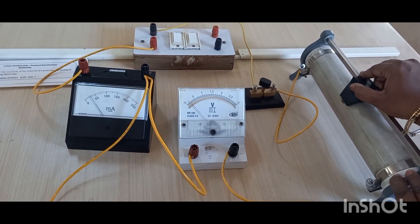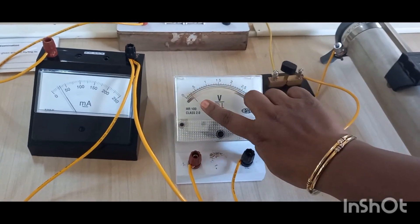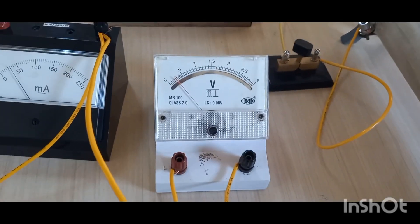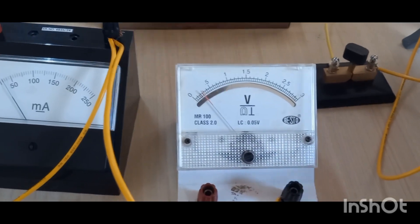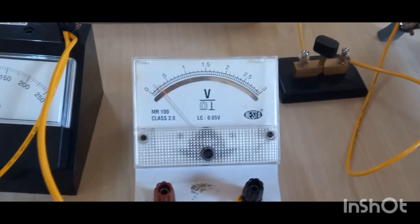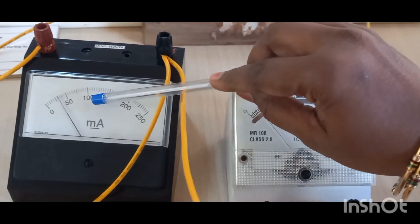So the pointer reading is moving. Let us stop here. So it is 5 divisions. The voltmeter shows here 0.25 and correspondingly we will measure the milliammeter reading.